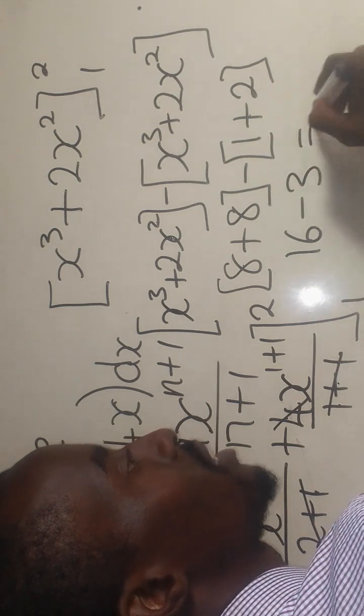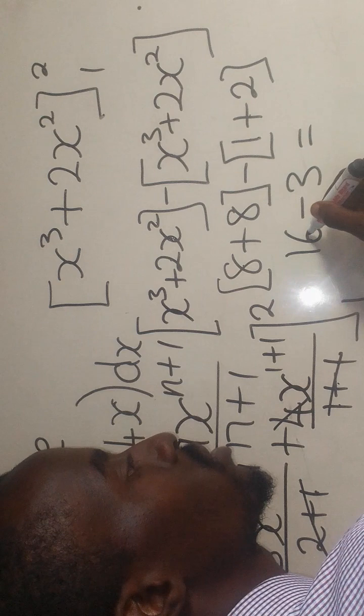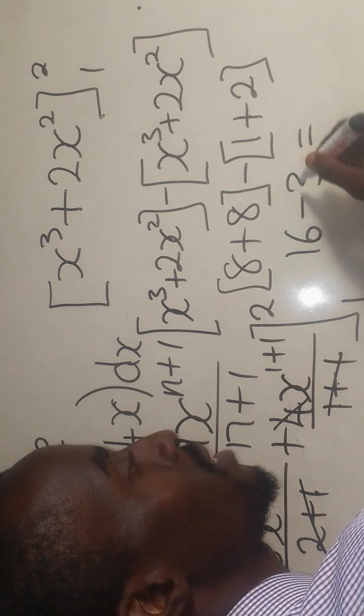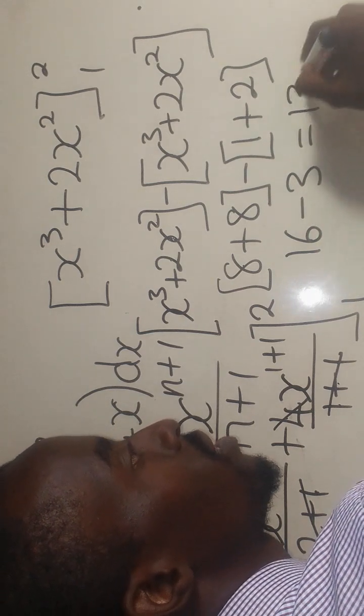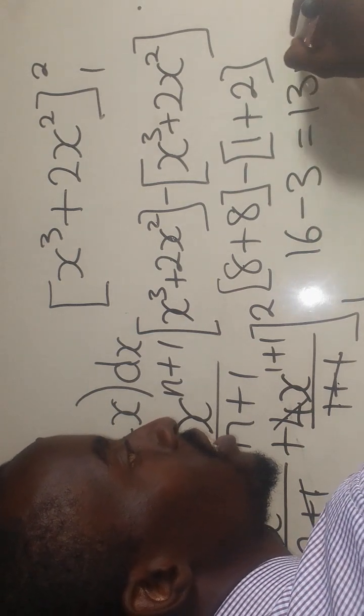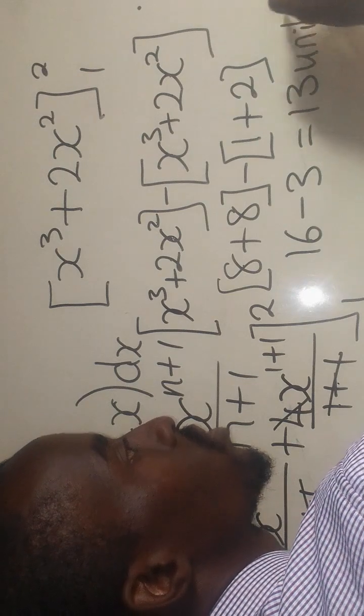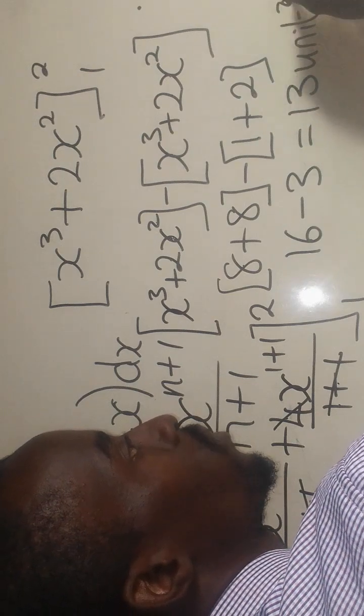So what is the answer here? 16 minus 3 is going to give me 13 units squared, which is the answer.